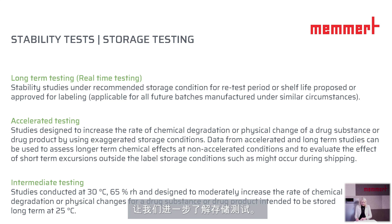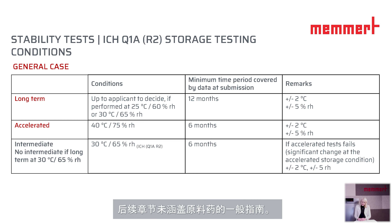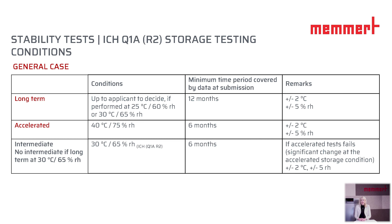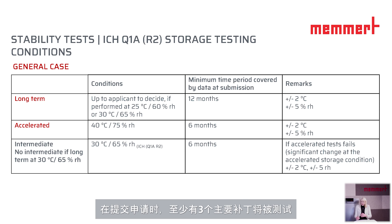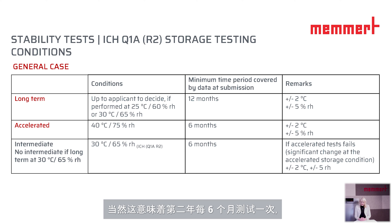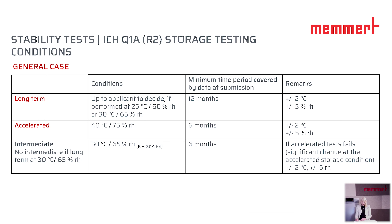For the general case, which applies if the drug substance is not covered by subsequent sections, long-term testing has to be done at 25°C/60% RH or 30°C/65% RH. The minimum time period covered by data at submission should be 12 months, and it must be within limits of ±2°C and ±5% RH. At least three primary batches at the time of submission will be tested. Testing frequency is every three months in the first year, then every six months in the second year, and annually thereafter, continuing to cover the full storage and shipment time.